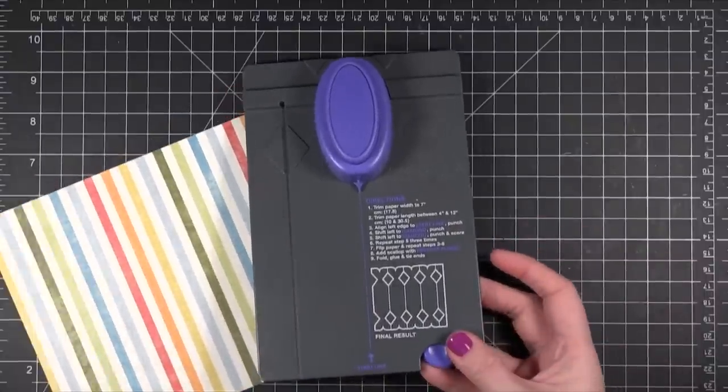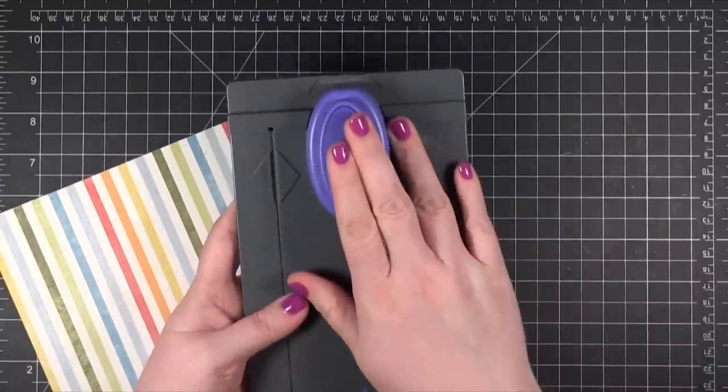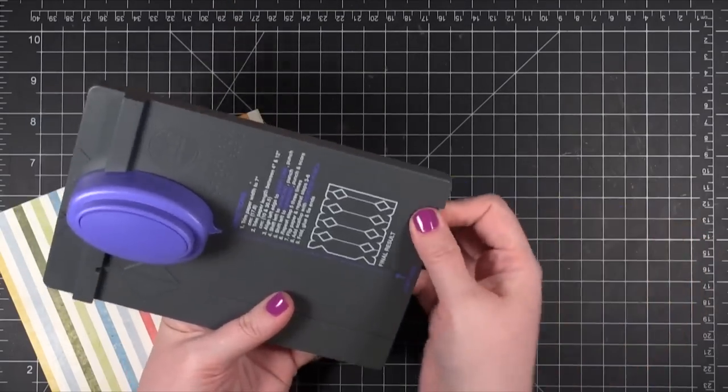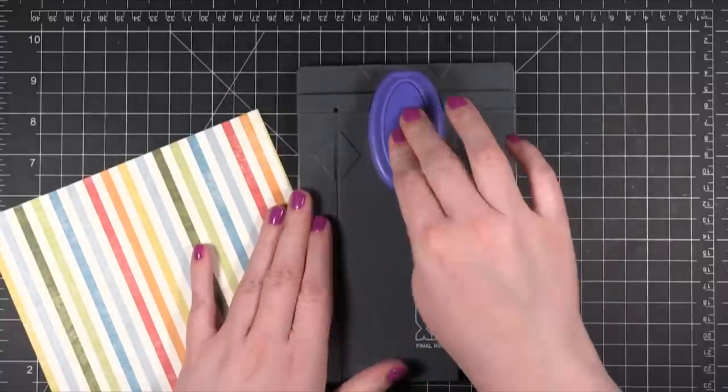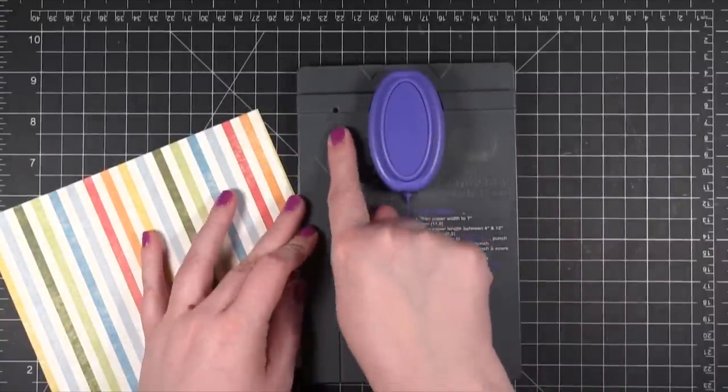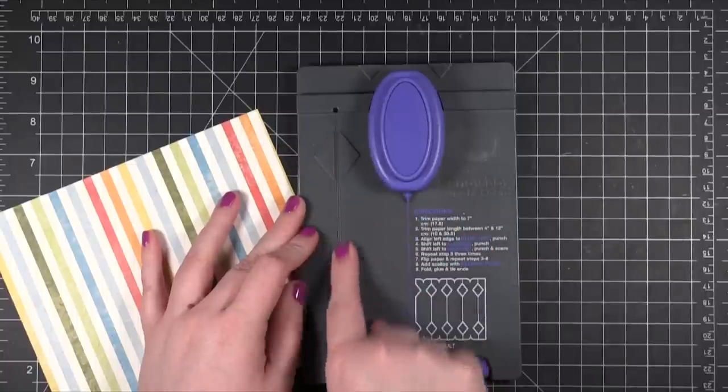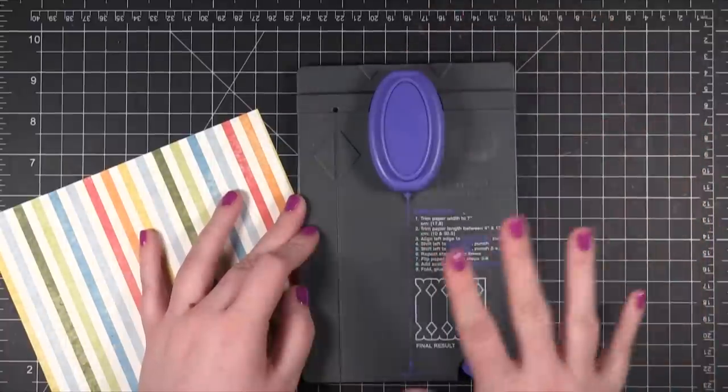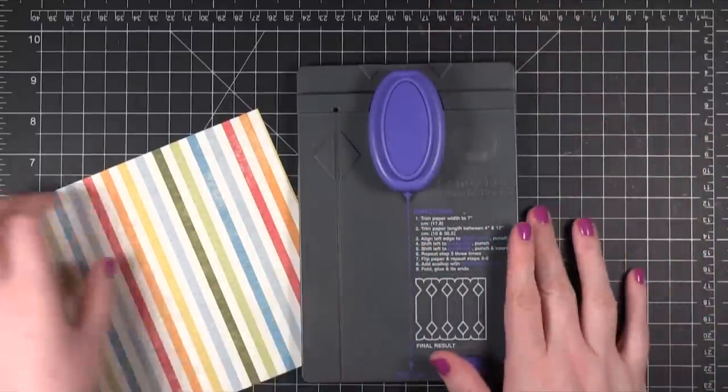So you're going to start with, well before I get to the actual process I'm just going to walk you through the punch board. It comes with a scoring tool that can slide in for storage right there. There's a punch right here that you'll see what we do in a minute. You also have a diamond right here and then a groove for scoring. You can also punch up on this end as well. And all of that will start to make sense once I get into the process.